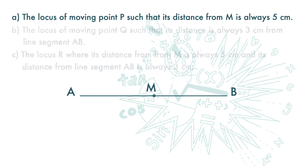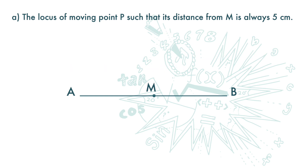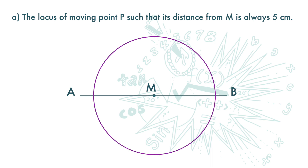Part A: the locus of moving point P such that its distance from M is always 5 centimeters. The locus of point P such that its distance from M is always 5 centimeters is a circle with its center at M and its radius 5 centimeters. Every point on the circumference is 5 centimeters from point M.